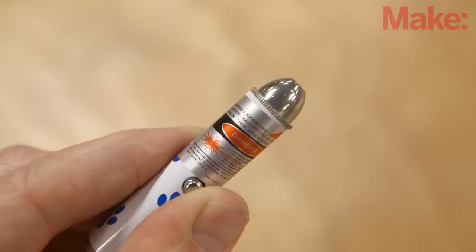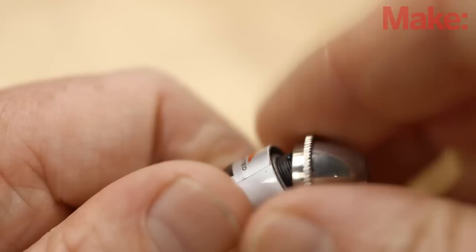The focus lens of just about any laser pointer will serve as the macro lens on the microscope. Don't waste money on an expensive model—the lens from a $2 laser is fine.